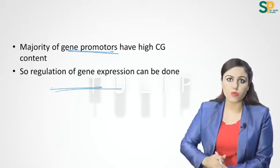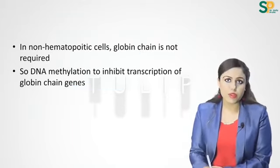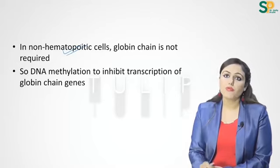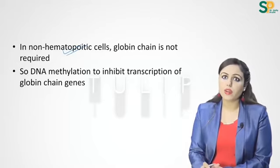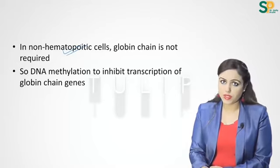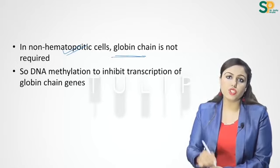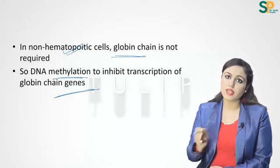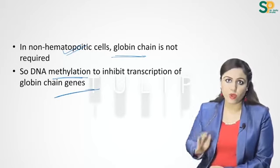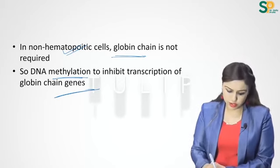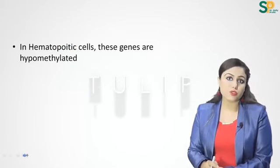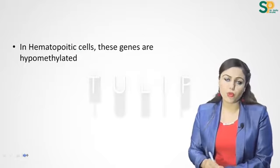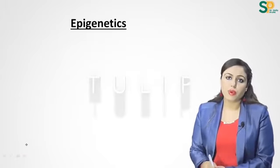By adding a methyl group to cytosine or removing it, we can regulate gene expression. For example, in non-hematopoietic cells the globin chain gene is methylated and therefore inactive, but in hematopoietic cells these genes are hypomethylated.